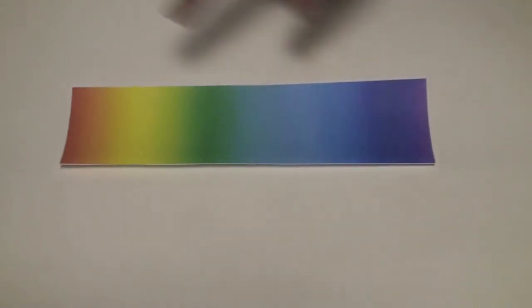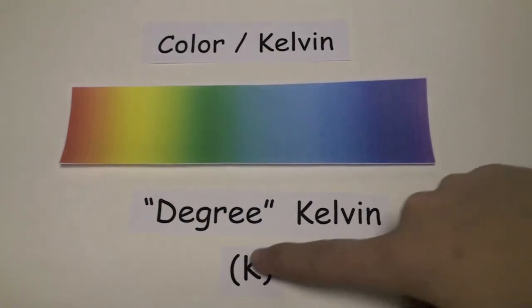So color appearance of lights can be defined in terms of color or Kelvin and measured in degrees Kelvin.